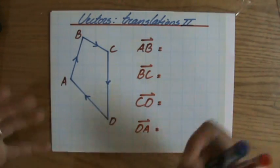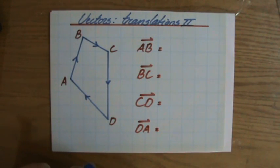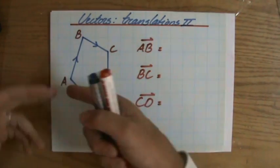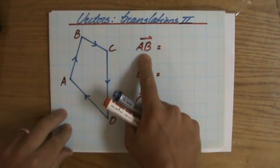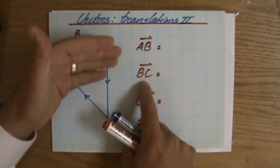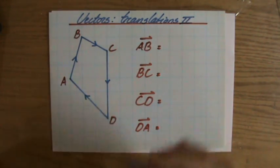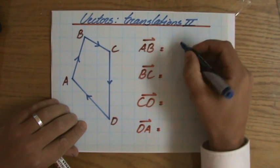And the question now is, write in column vector notation the translation from A to B, and then the next question from B to C, C to D, and then D to A. So maybe you want to try that yourself first before you look at my answers.